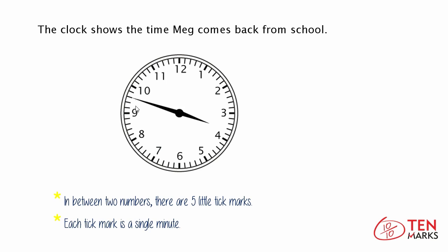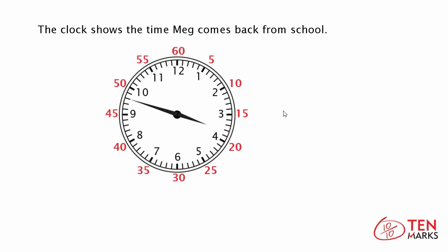To read time to the nearest minute, first look at the minute hand. If it's pointing directly at a number, you can skip count by fives starting from twelve and you'll land on that number. But if it's in between two numbers, then you stop at the smaller number and count up by one minute at each tick mark.